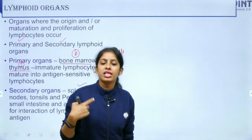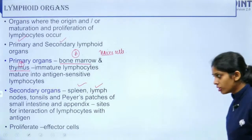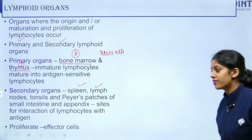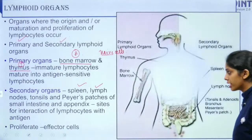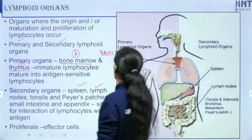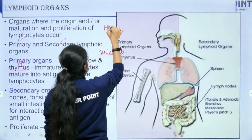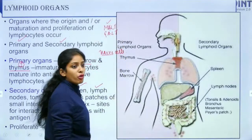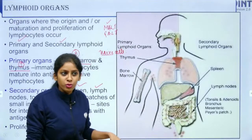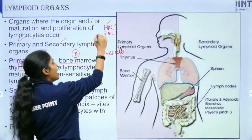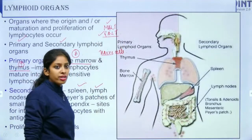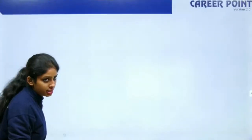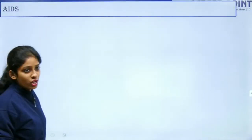Secondary lymphoid organs are sites of interaction of lymphocytes with antigens. We also have MALT — mucus-associated lymphoid tissue — and GALT — gastrointestinal-associated lymphoid tissue — which have immune cells roaming to find foreign particles.